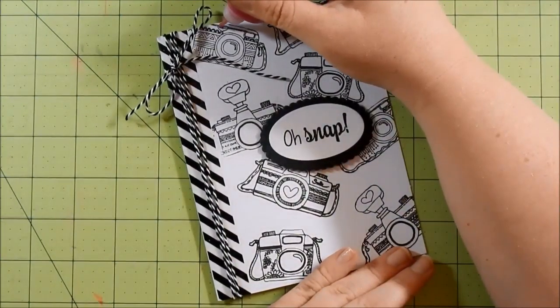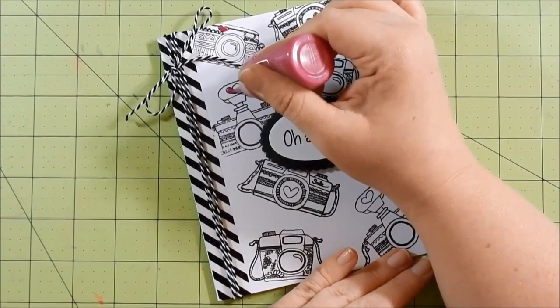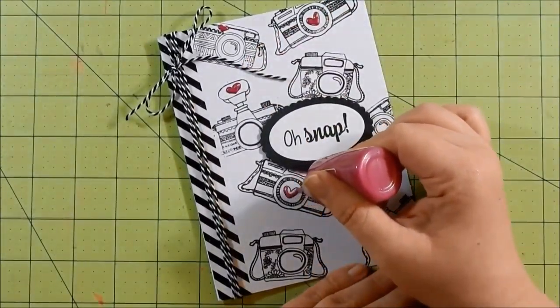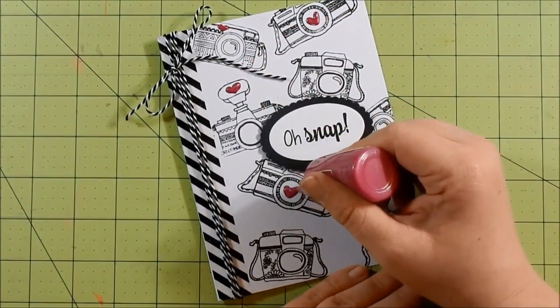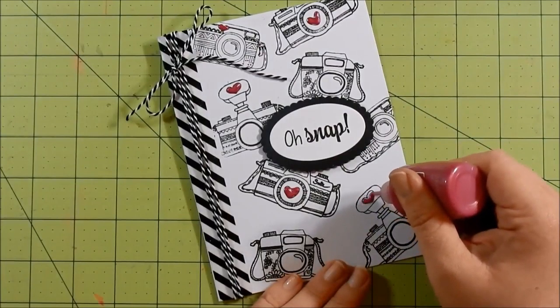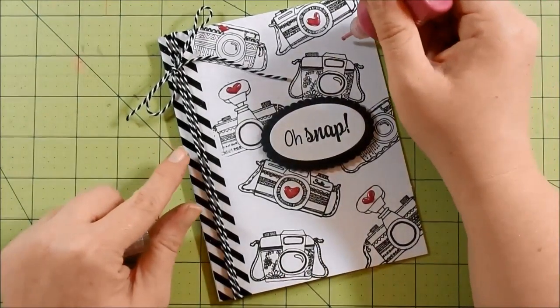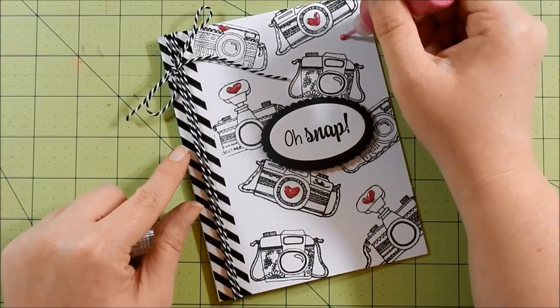After tying my twine, I take these Nuvo drops that were in the Love from Lizzie kit this past month. I'm not sure of the color, but I will have it listed below. I fill in the hearts and then add a couple little dots around the card.